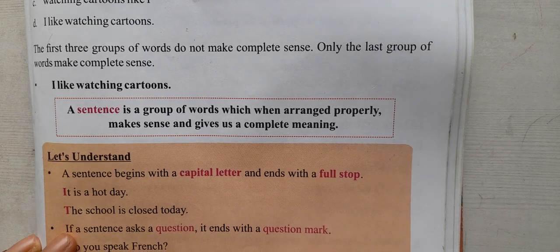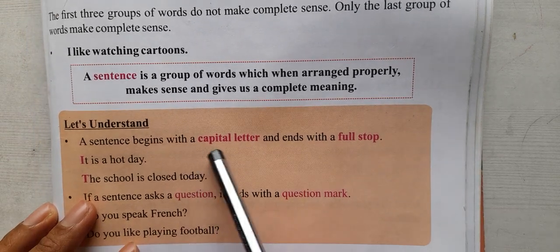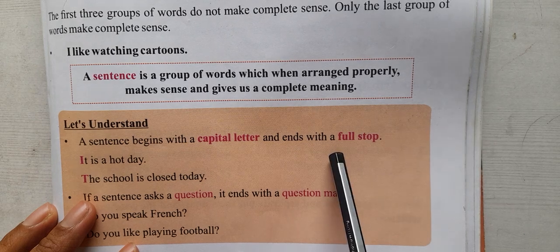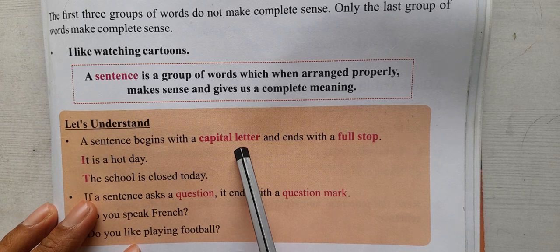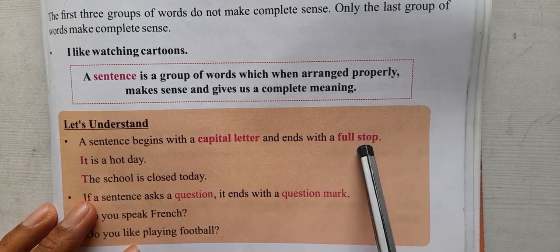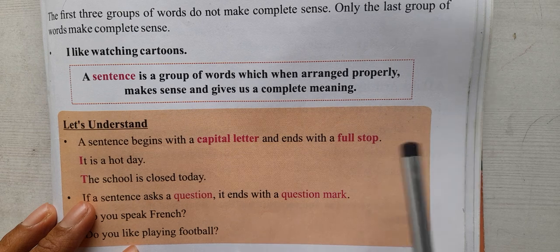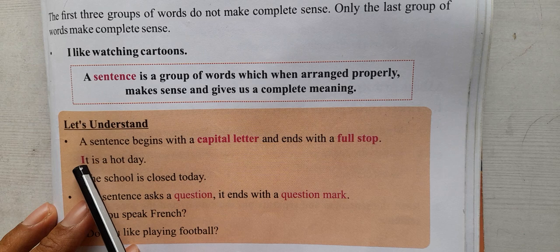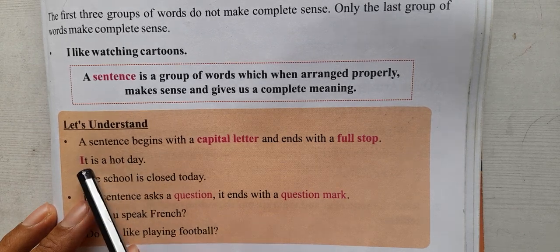To identify a sentence, the sentence begins with a capital letter and ends with a full stop. A sentence always starts with a capital letter and ends with a full stop — that dot indicates the sentence is complete. For example: 'It is a hot day.' Here the sentence begins with a capital letter and ends with a full stop.